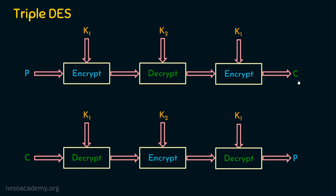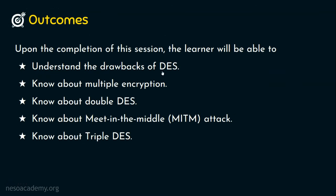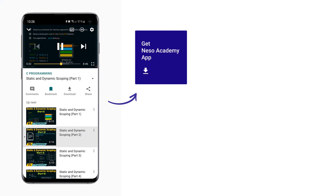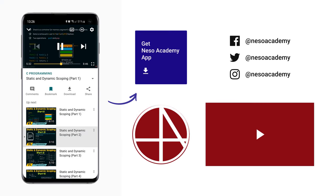I hope things are clear. We understood the drawbacks of DES, we have seen about multiple encryption and double DES, we learned about the meet in the middle attack which is a known plaintext attack, and finally we saw what is triple DES, with two variations — triple DES with two keys and triple DES with three keys. I hope you enjoyed this presentation. Thank you for watching, and we'll see you next time.